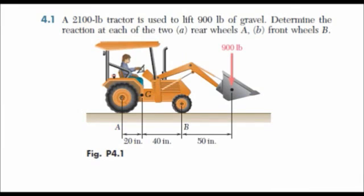A 2100-pound tractor is used to lift 900 pounds of gravel. Determine the reaction at each of the two A rear wheels and B front wheels. So now let's proceed with problem 4.1.